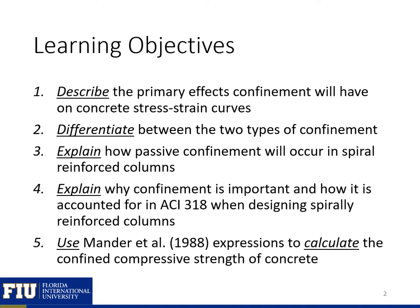By the end of this section, I want you to be able to describe the primary effects confinement will have on the concrete stress-strain curve; differentiate between the two types of confinement, active and passive; explain how passive confinement will occur in spiral reinforced columns; explain why confinement is important and how it is accounted for in ACI 318 when designing spirally reinforced columns; and finally, be able to use Mander et al. expressions to calculate the confined compressive strength of concrete.